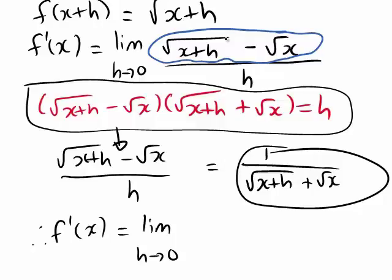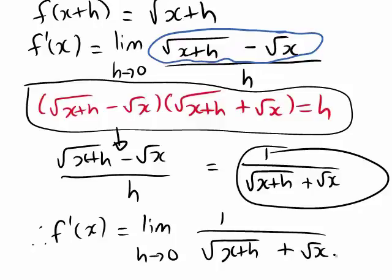Rearranging gives us that the square root of x plus h minus the square root of x divided by h equals 1 divided by the square root of x plus h plus the square root of x. So we can rewrite f'(x) as the limit as h approaches 0 of 1 divided by square root of x plus h plus the square root of x. Originally, having h on the denominator meant we would end up with division by zero, which is undefined. But in this new form, substituting h equals 0 will not cause division by zero.